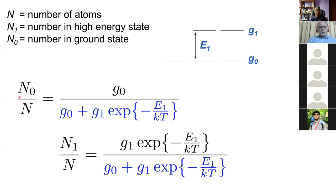The number of atoms out of the total N which are in the ground state is the degeneracy of the ground state divided by the total number of possibilities, including the ground state and the higher energy state weighted by exp(-E1/kT). Similarly, the number in the higher energy state N1/N is the probability of being in the high energy state times the number of degenerate states at that energy.